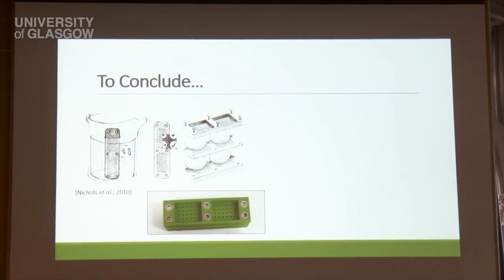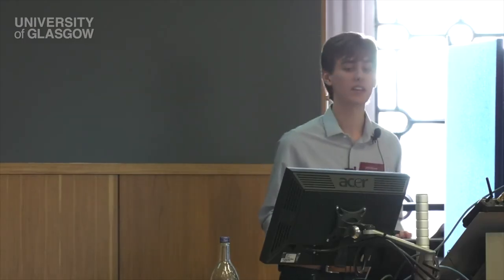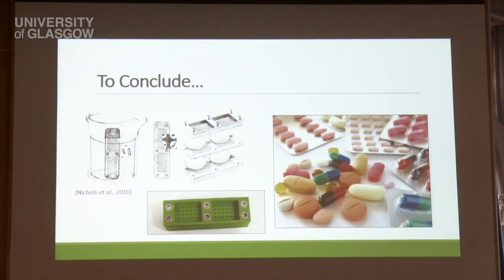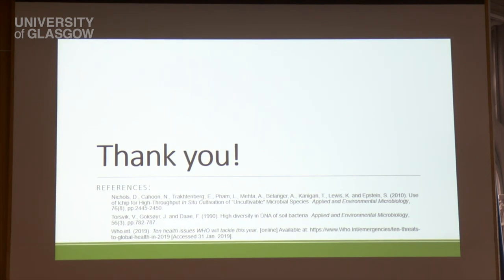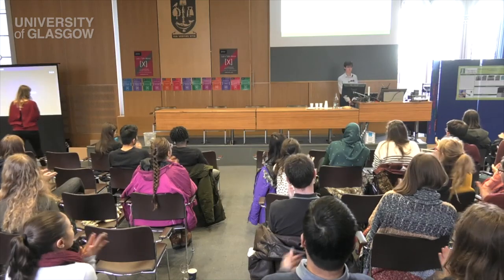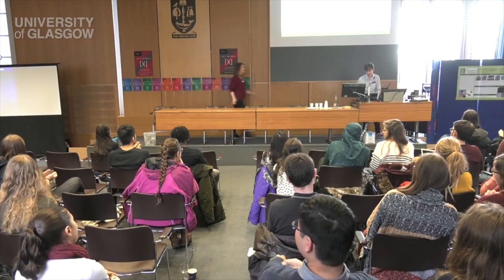In conclusion, with the I-chip we can grow soil bacteria that have never been grown before, and we have seen that this is much better than standard culturing techniques. These bacteria grown using I-chips are likely to produce antibiotics against which no resistance currently exists, and these antibiotics should be able to help us in the fight against the current antibiotic resistance crisis. Thank you for listening and I'll be happy to take any questions.